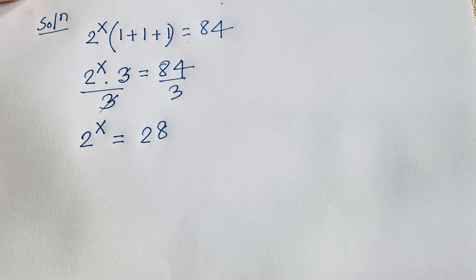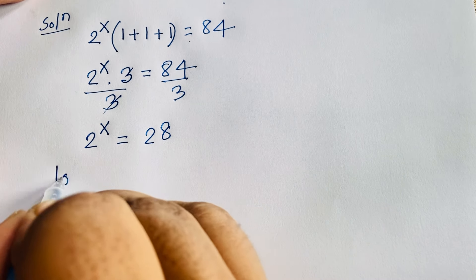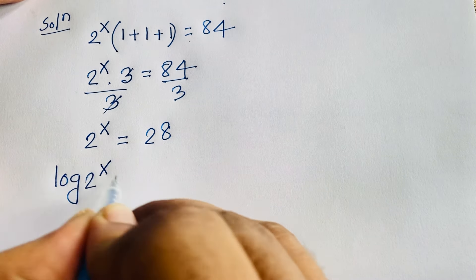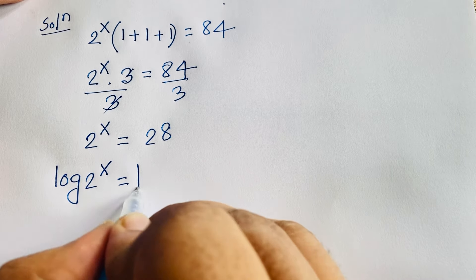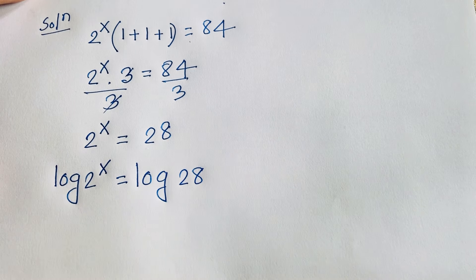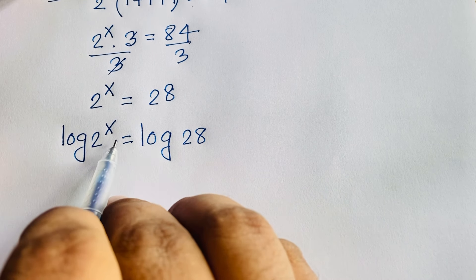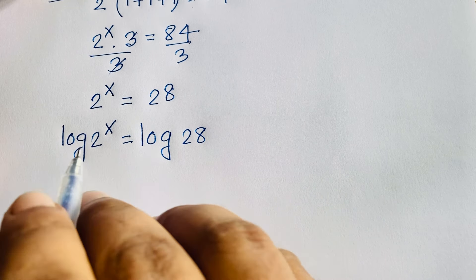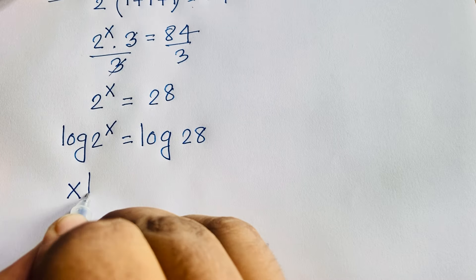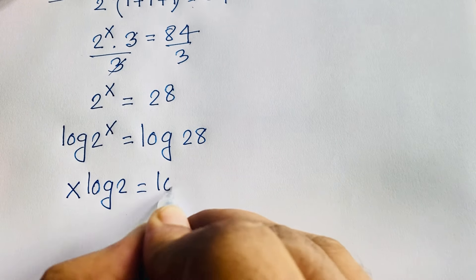We have 2 to the power x equals 28. Applying the natural log to both sides: log(2 to the power x) equals log 28. According to logarithm rules, the exponent x moves to the front, giving us x times log 2 equals log 28.